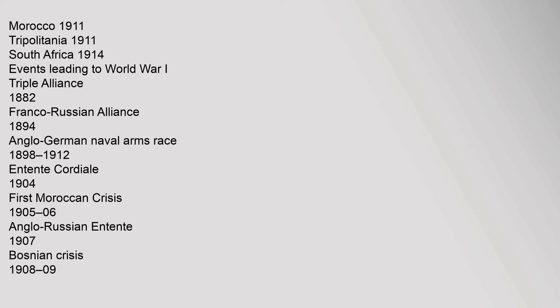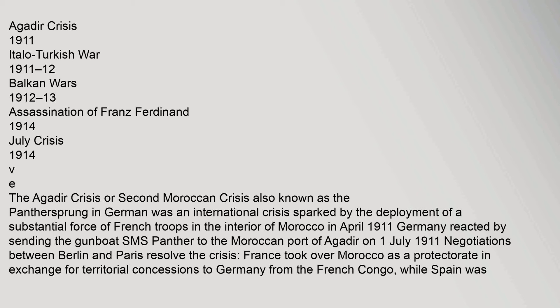Events leading to World War I: Triple Alliance 1882, Franco-Russian Alliance 1894, Anglo-German naval arms race 1898–1912, Entente Cordiale 1904, First Moroccan Crisis 1905–06, Anglo-Russian Entente 1907, Bosnian Crisis 1908–09, Agadir Crisis 1911, Italo-Turkish War 1911–12, Balkan Wars 1912–13, Assassination of Franz Ferdinand 1914, July Crisis 1914.